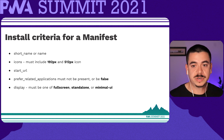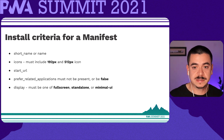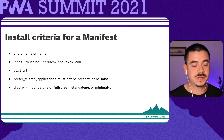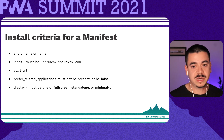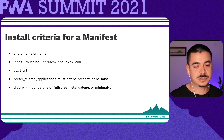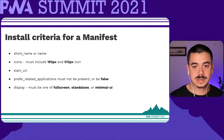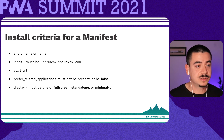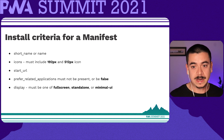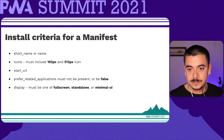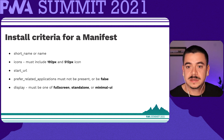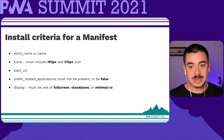The start URL is required and tells the browser where your application should start when it's launched. It prevents the app from starting on whatever page the user was on when they added your application to their home screen. Your start URL should direct the user straight into the app rather than a product landing page.